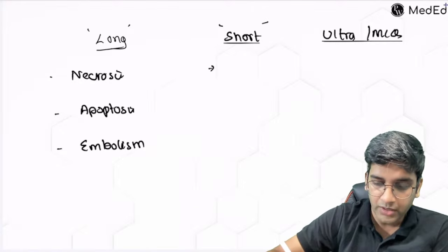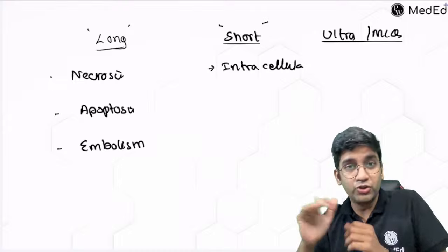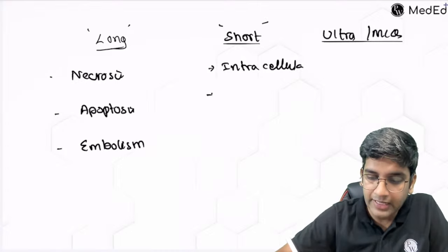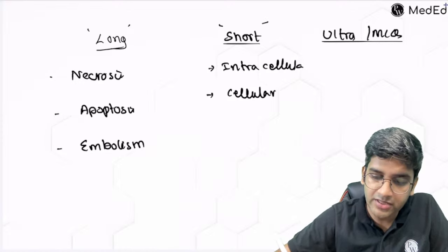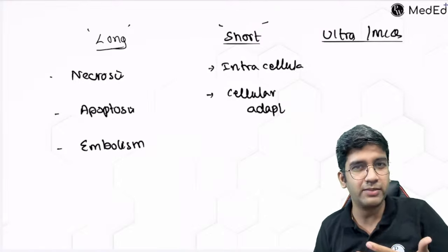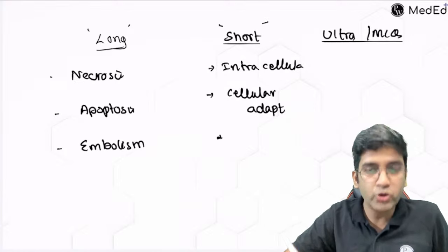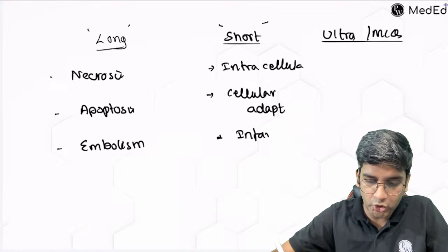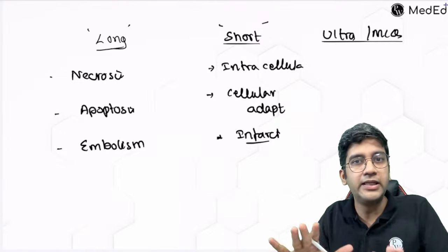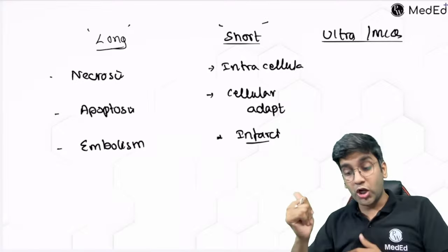For short answers in chapter one: intracellular accumulations including fatty change, calcifications, pigments like haemosiderin and melanin can come as short answers. Cellular adaptation — metaplasia, hypertrophy, hyperplasia, atrophy — is commonly asked. In hemodynamics, infarct — red infarct, white infarct, and differences — can easily be asked in a short answer.